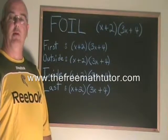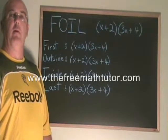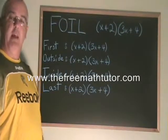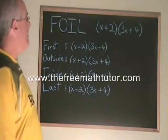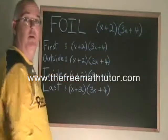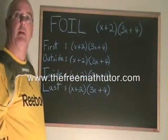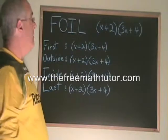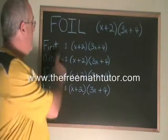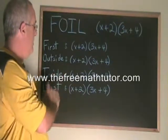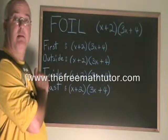FOIL is a trick we use when we are multiplying two binomials. In this example, we have x plus 2 times 3x plus 4. FOIL stands for first, outside, inside, last.